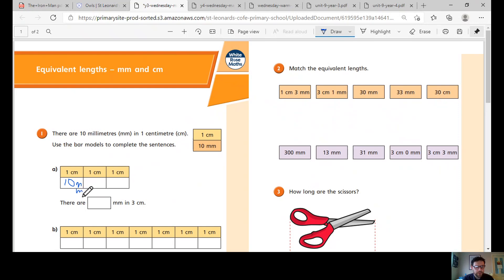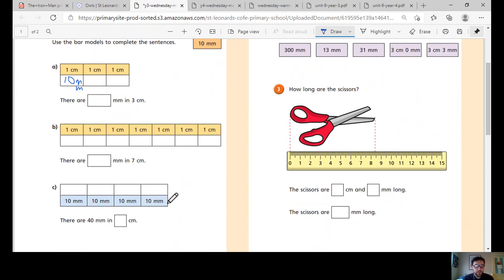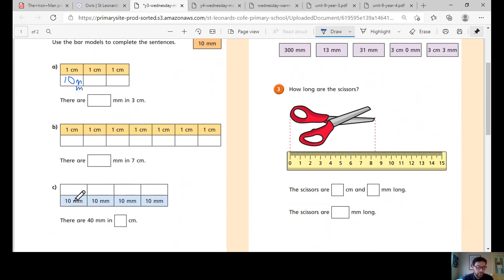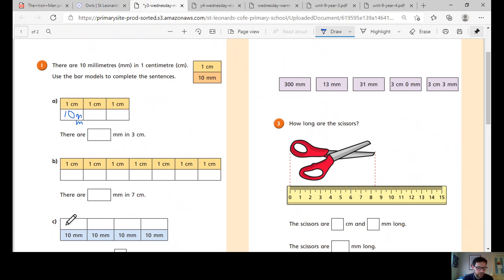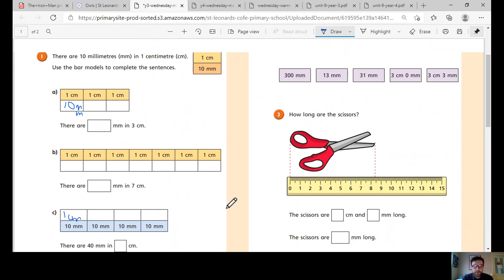You're going to need to be able to fit it in, and then you can work out how many millimetres are in three centimetres, and you can repeat for the next one. This one is the opposite way around, so if we know that 10 millimetres is one centimetre, we fill our bar model in and we'll be able to work out how many centimetres there are in total.